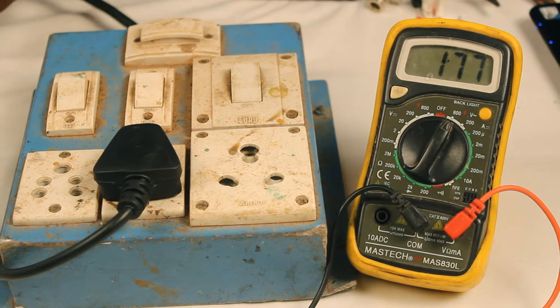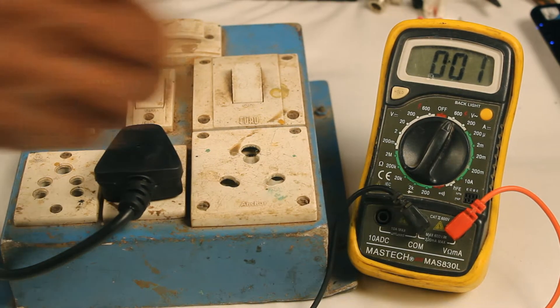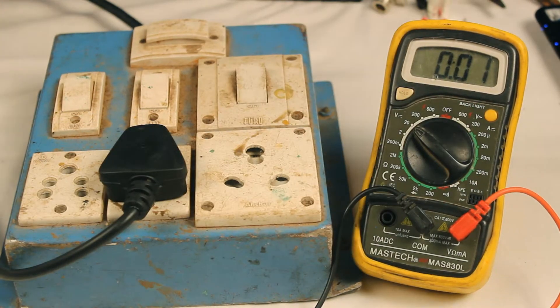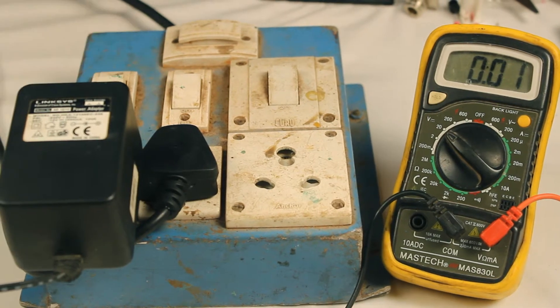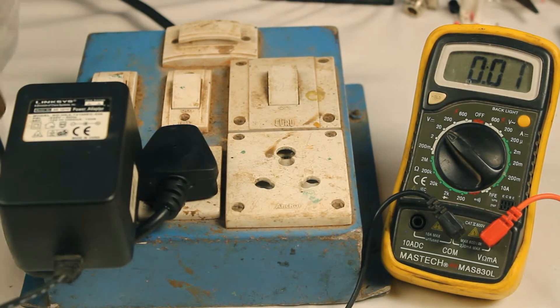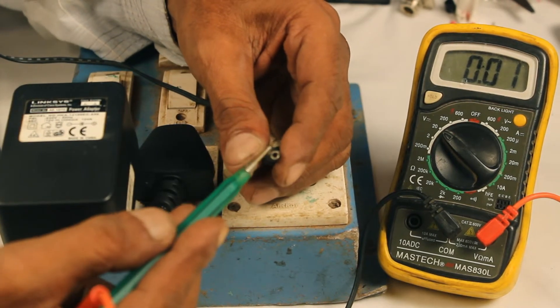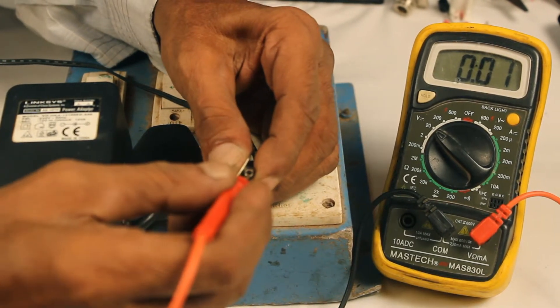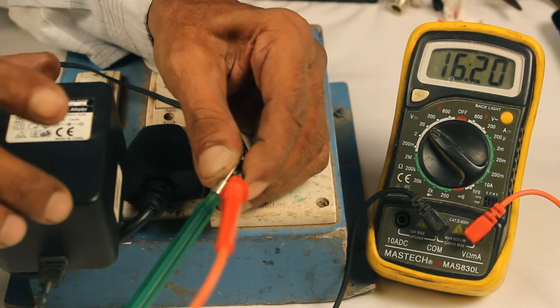We can also use this multimeter to measure DC voltage. Switching over to 20 volt range, plugging in a DC power supply, switch on and I shall plug the probes into. This is a 16 volt power supply. It reads 16.18 voltage.